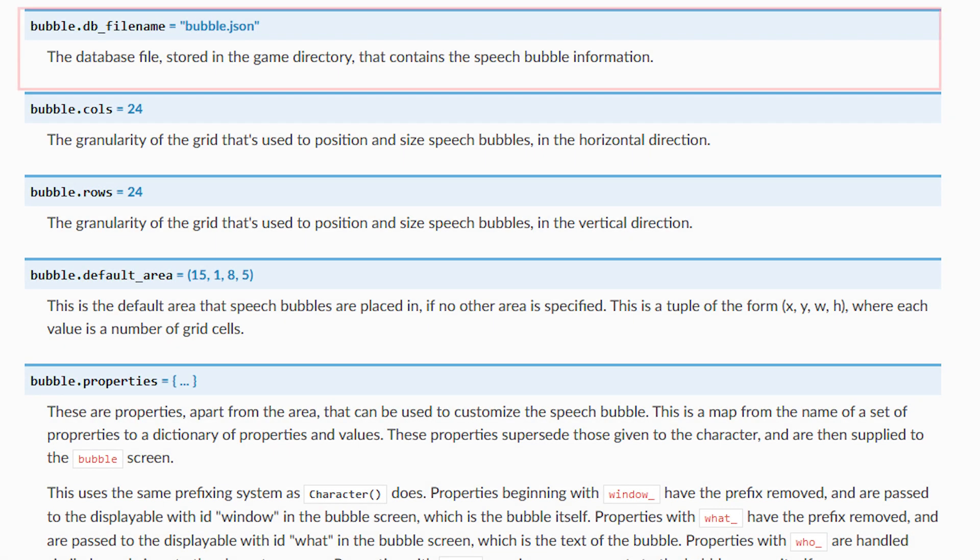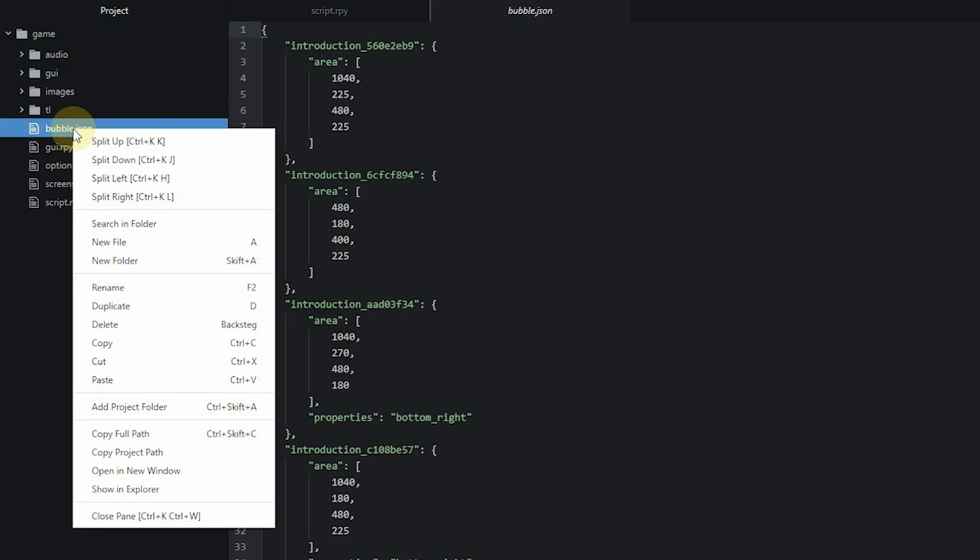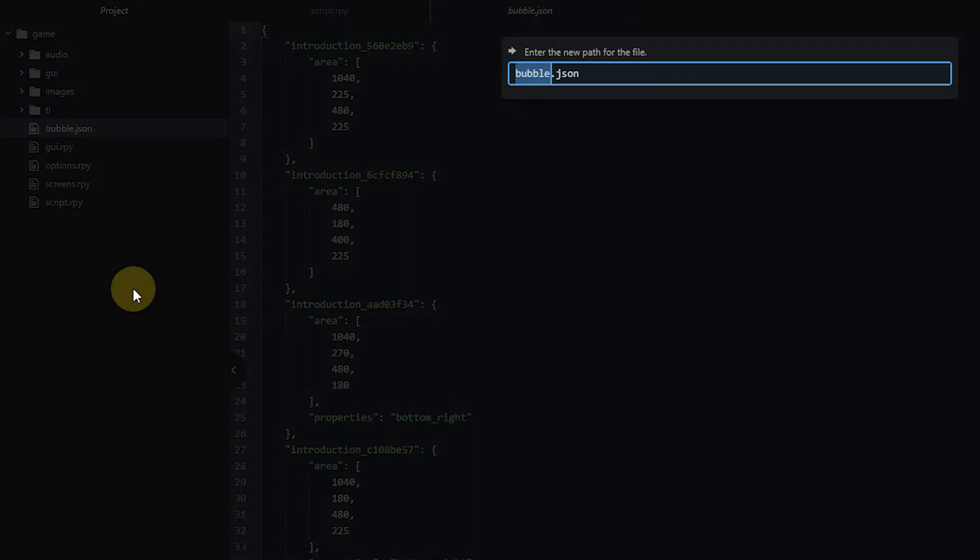One of the properties you can adjust for the bubble system is the name of the bubble.json file. This isn't really necessary to do, but might be something you like to do if you find another name to be more fitting. Doing this isn't as straightforward as it might seem though, as you can't simply change the file name by renaming it after it's been created.